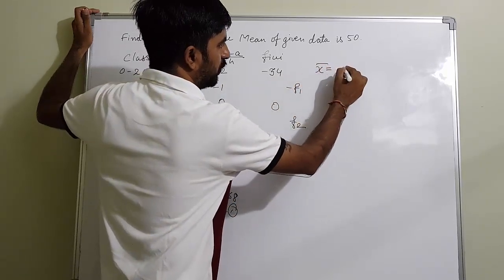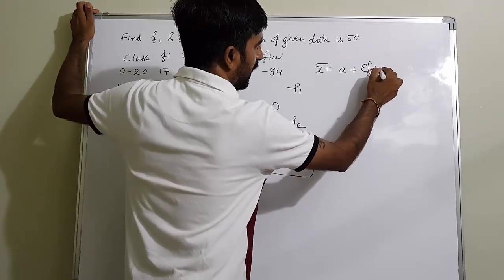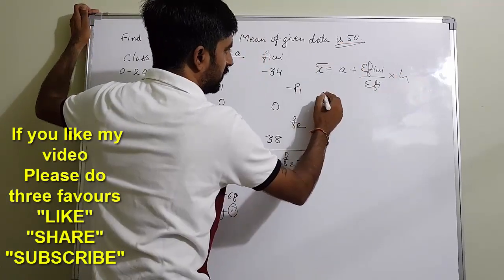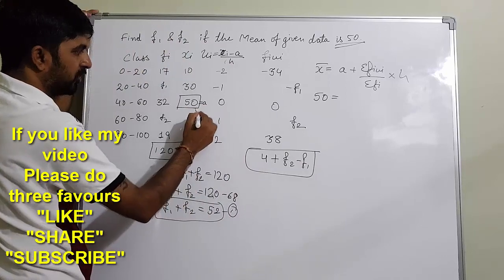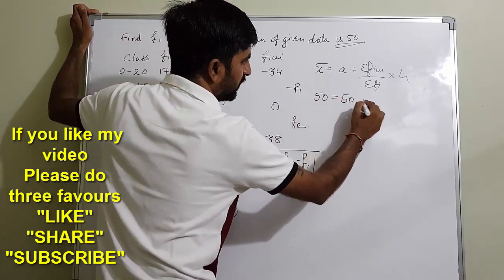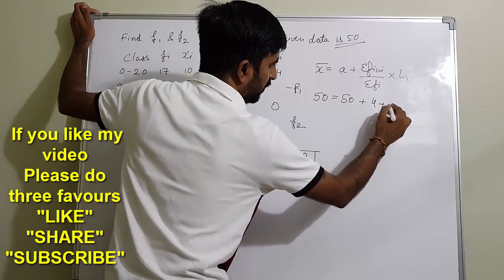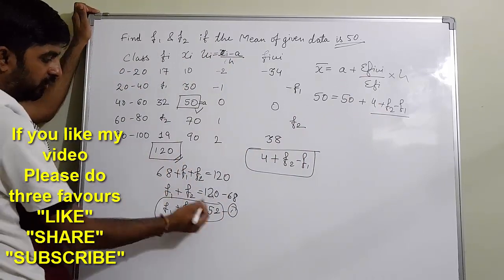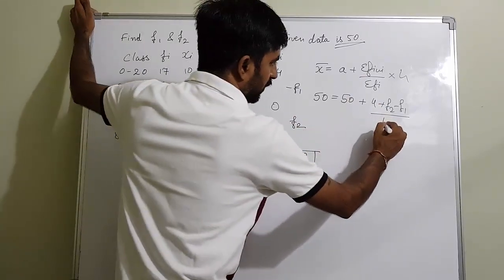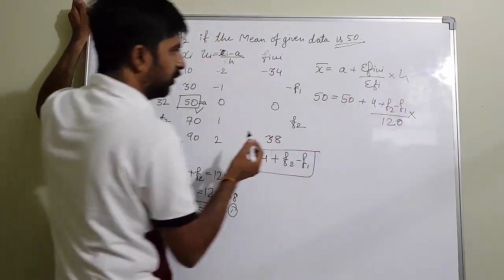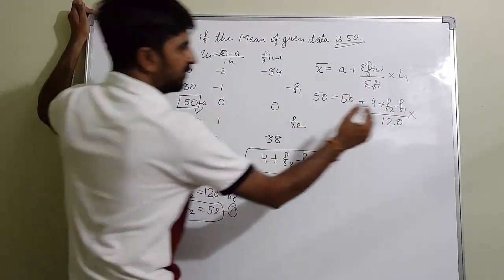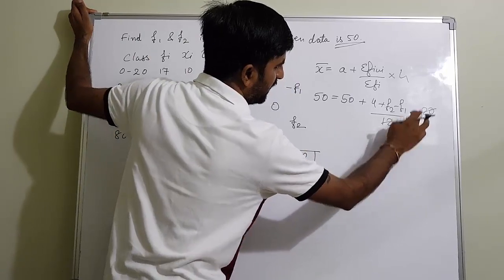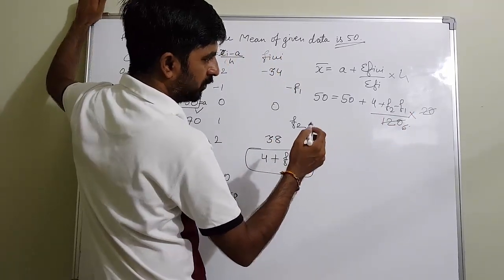We apply the step deviation formula: X̄ equals A plus (Σfi·ui divided by Σfi) into H. Substituting: 50 equals 50 plus (4 plus f2 minus f1) divided by 120, into 20. We can cancel 20 and 120 to get 6, simplifying the denominator to 6.